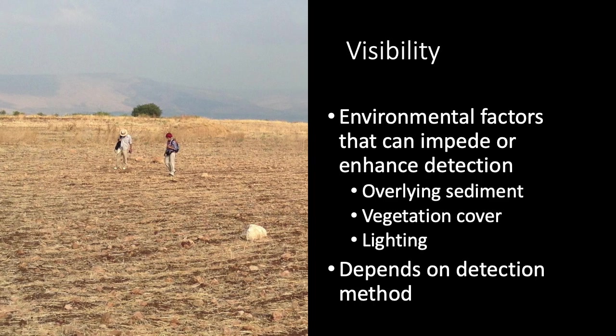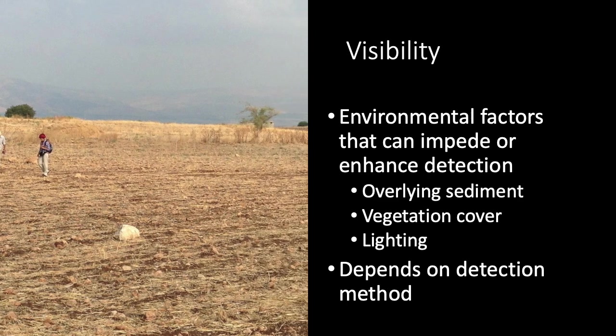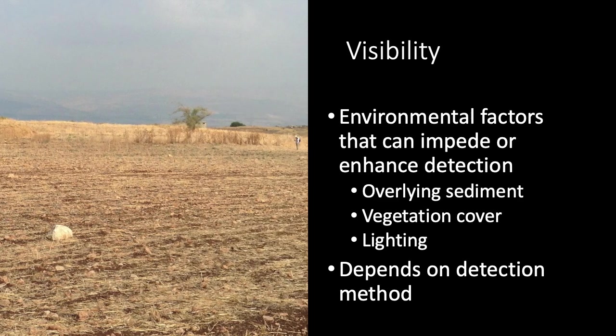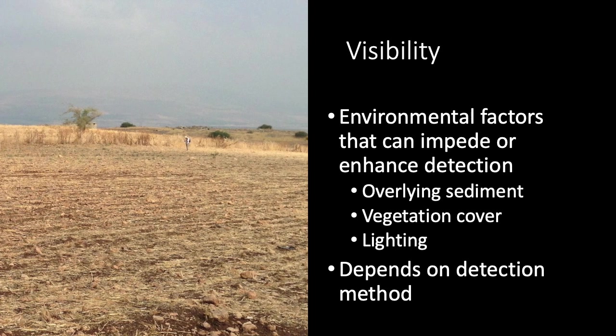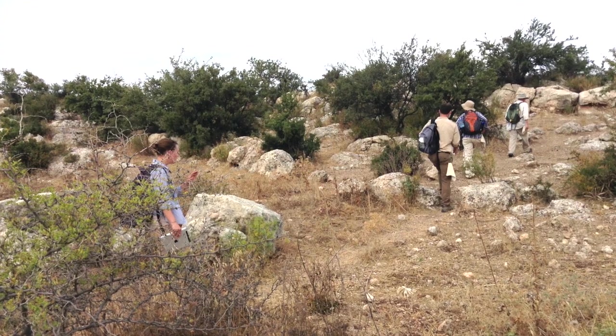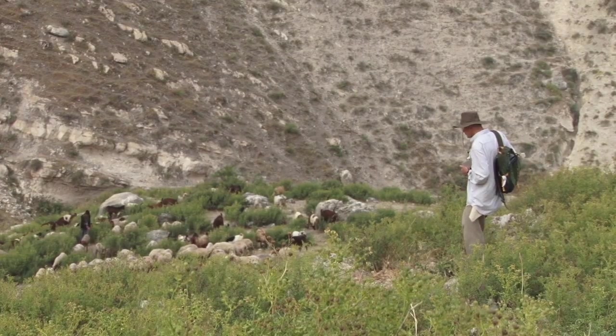As I mentioned in my introductory video on archaeological survey, visibility has to do with factors that impede our ability to detect things. These are mostly environmental variables such as vegetation cover and lighting conditions, but they also depend on detection method.